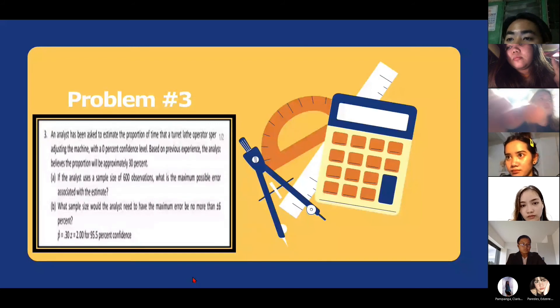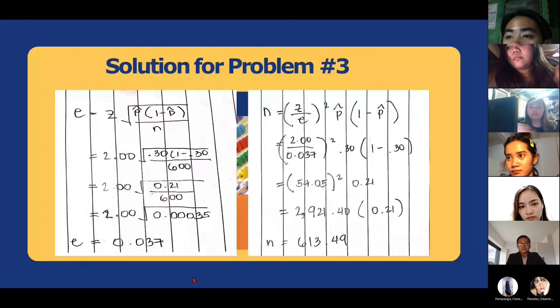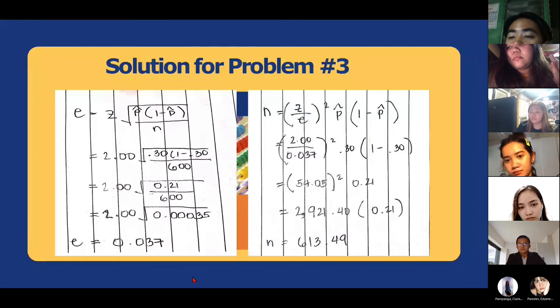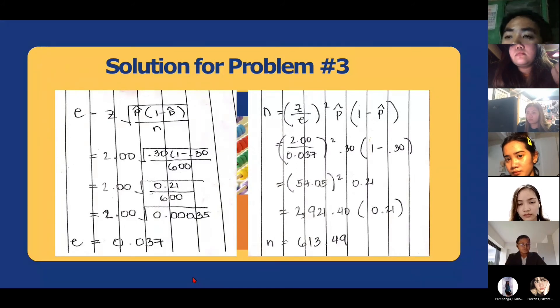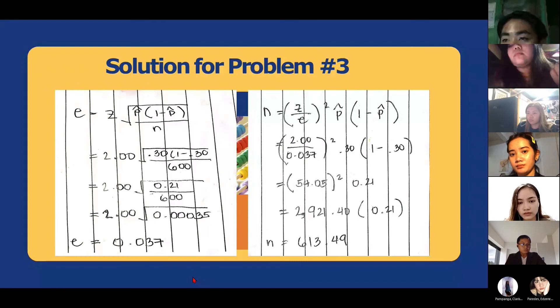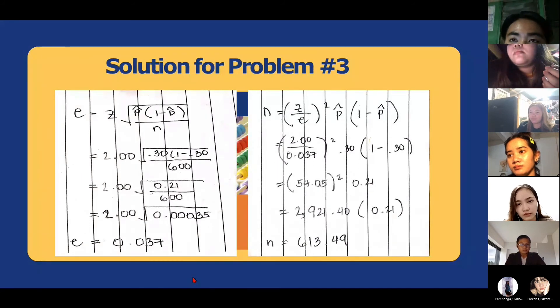The sample proportion is 0.30 and the number of standard deviations needed to achieve desired confidence is 2.00 for 95.5% confidence. And we're going to use the formula of the maximum error percent equals number of standard deviations needed to achieve desired confidence. So 2.00 equals square root of 0.30 times 1 minus 0.30 over 600.